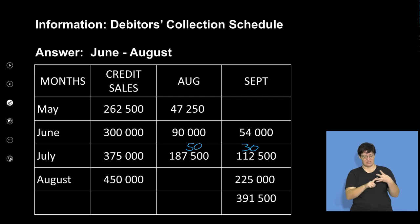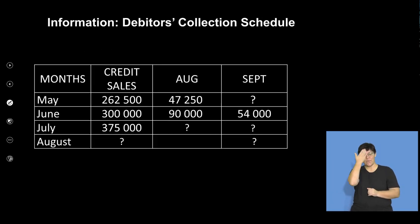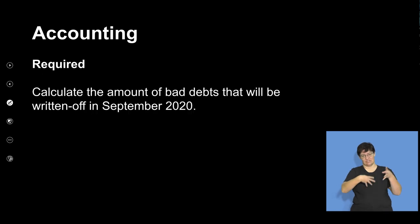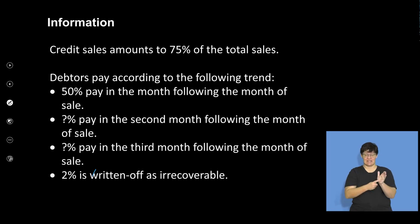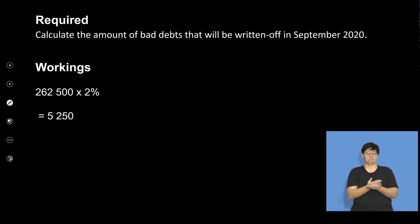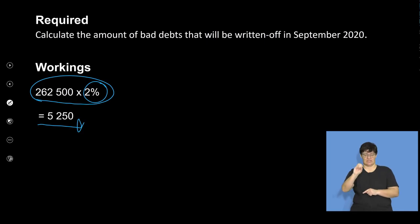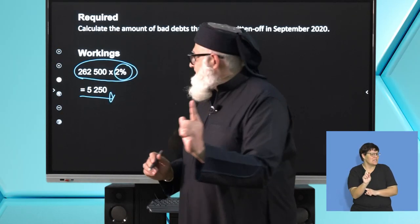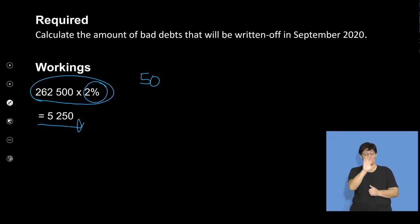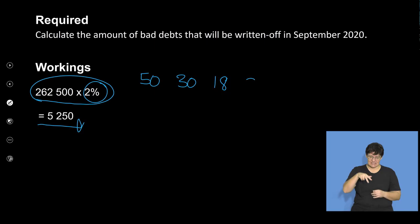Completing the schedule, we also calculate the bad debts. The sale figure was 262,500 times 2%, giving bad debts of 5,250. What was important here: 50% was given, we calculated 30% and 18%. 50 + 30 + 18 = 98%, with 2% being the irrecoverable debt. These are the percentages effective for your trend.